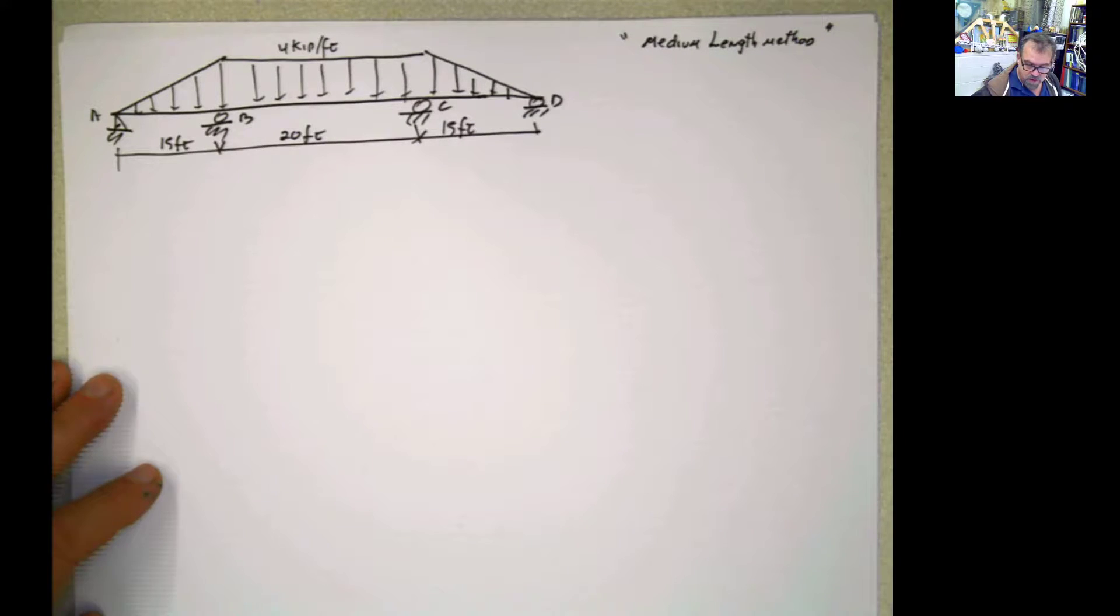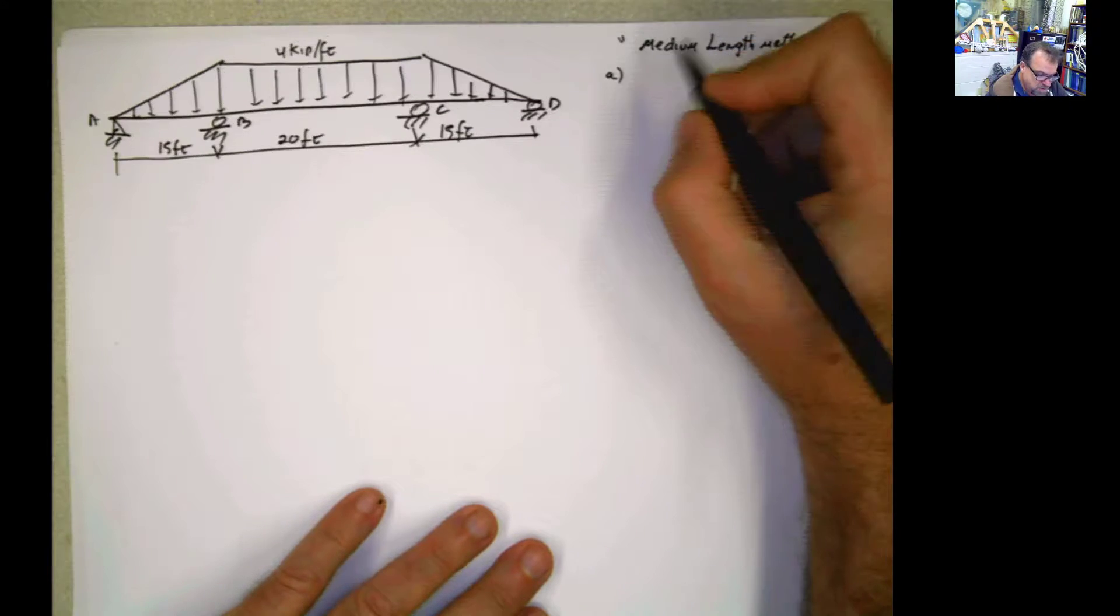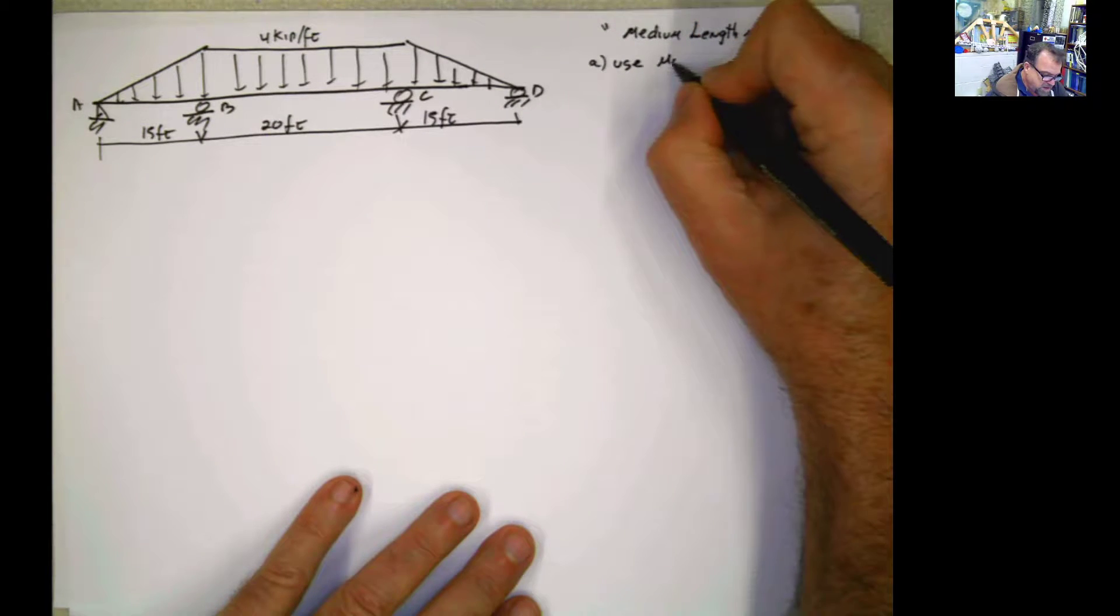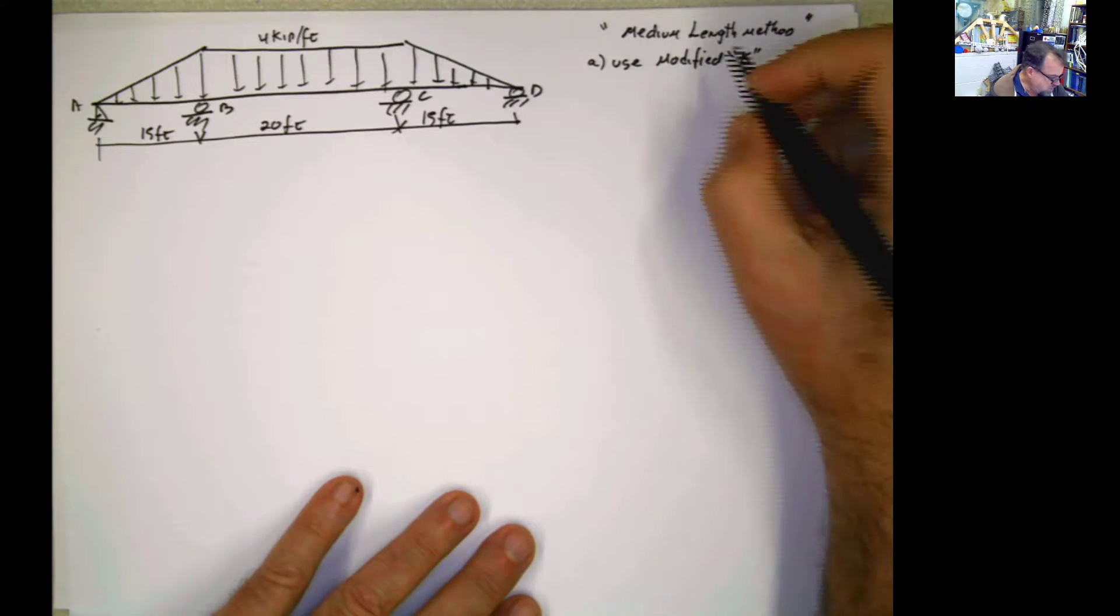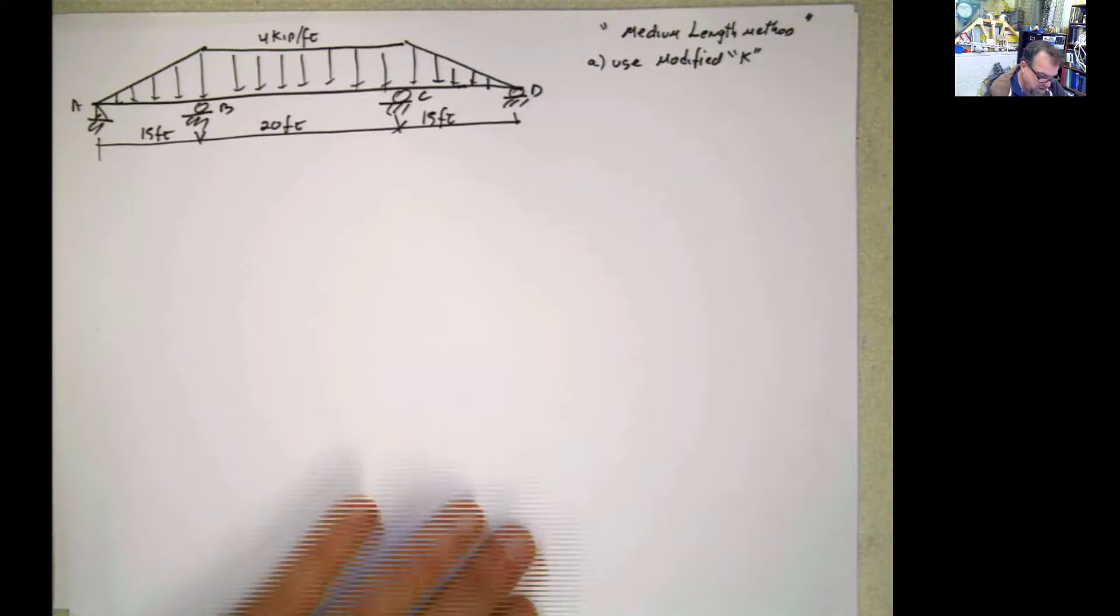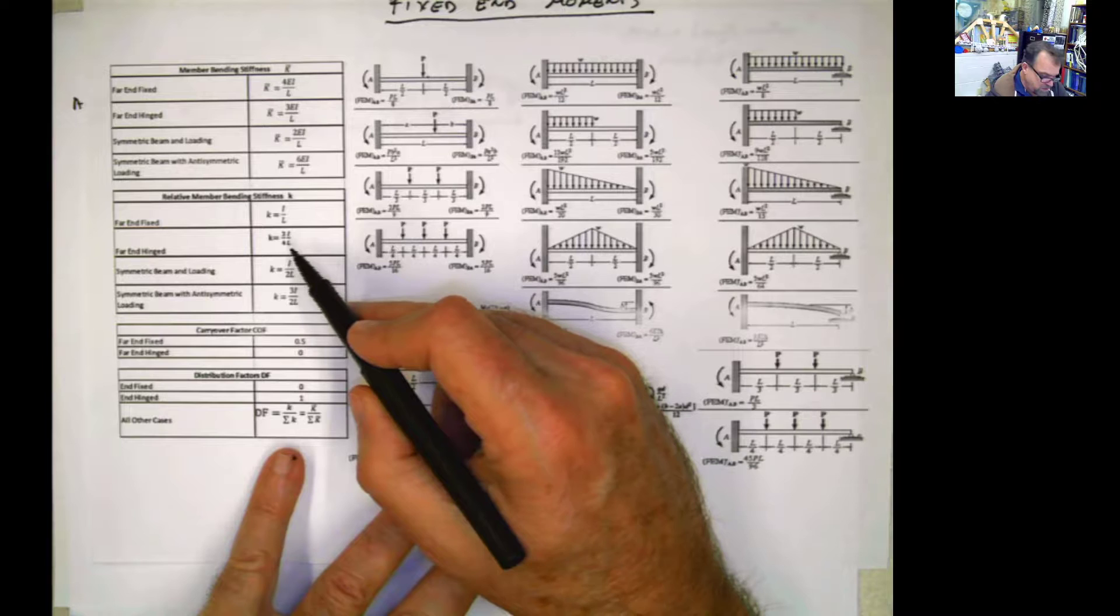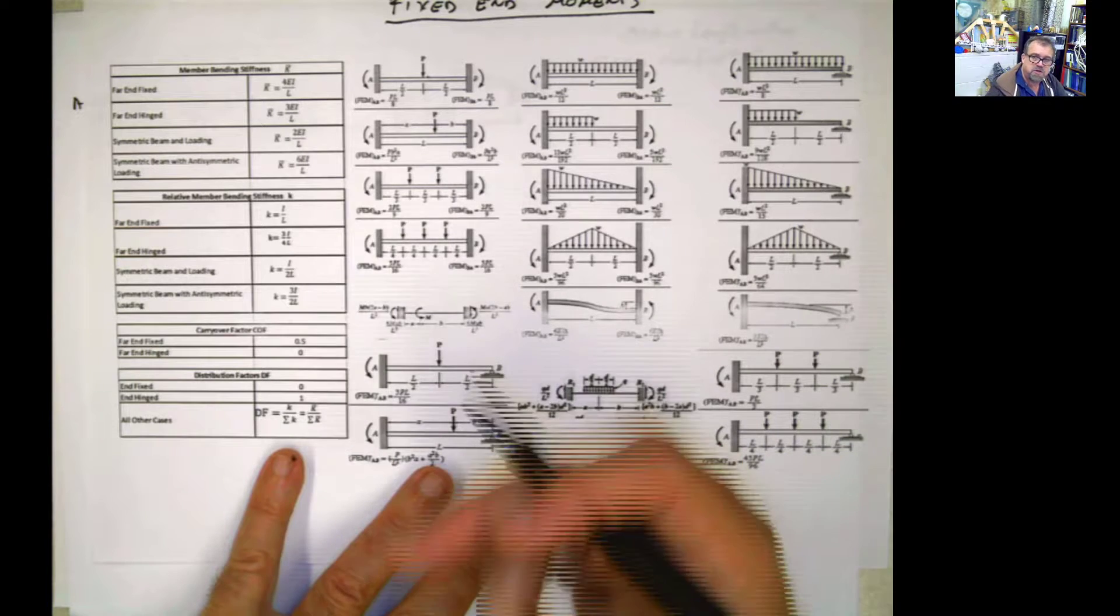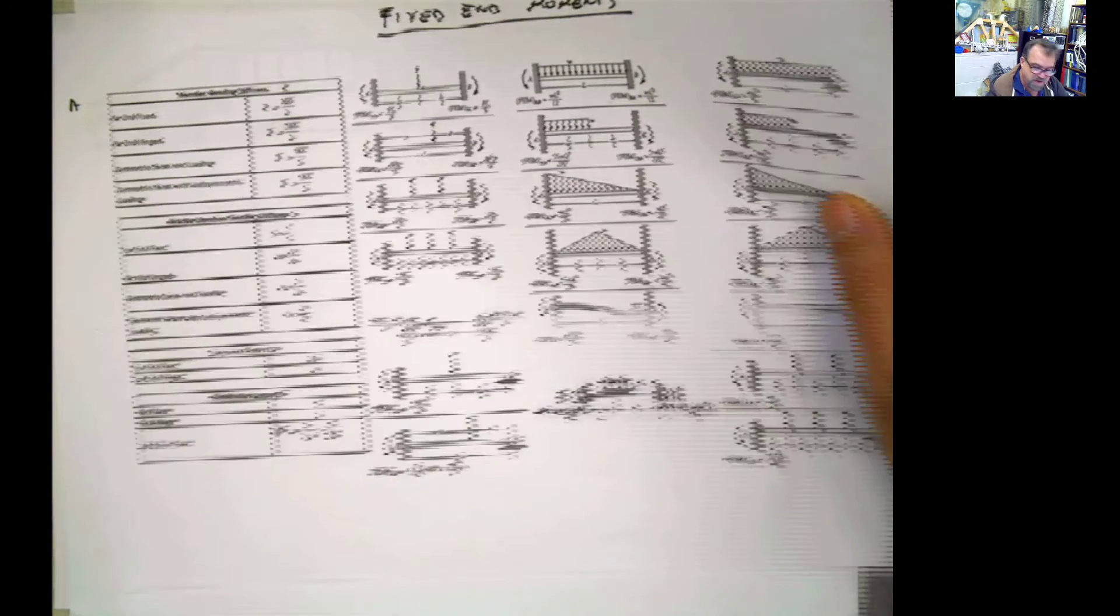Now, we're going to do an intermediate part. In this intermediate part, I'm going to apply several assumptions or simplifications. First, I'm going to use the modified k that we discussed. Because whenever you have a far end hinge, a far end which is pin, I can use a k for that member as 3i divided by 4l. We derived this in the introductory video, so go watch that. We're going to use that modified k.